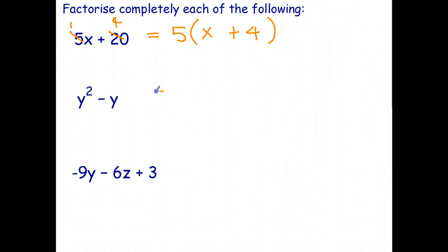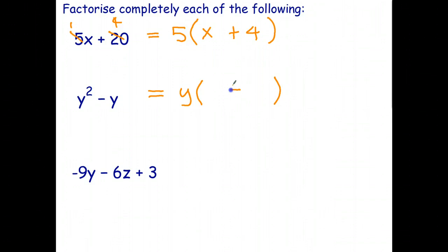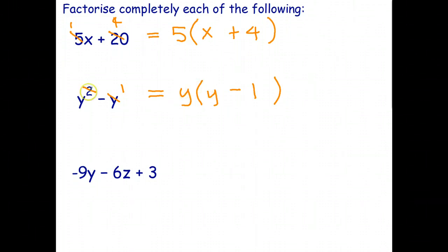For the second example, looking at y² and y: y² has two factors of y and the other term has one factor of y. The common factor is y. Taking out one factor of y from y² leaves y, and taking it from y leaves 1. So y²−y factorizes to y(y−1). Check: y×y=y², y×1=y.